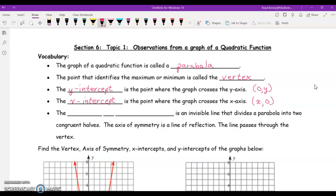The axis of symmetry is the invisible line, sometimes it's called the line of symmetry, that divides a parabola into two congruent halves. The axis of symmetry is a line of reflection. The line passes through the vertex. That's important to note.